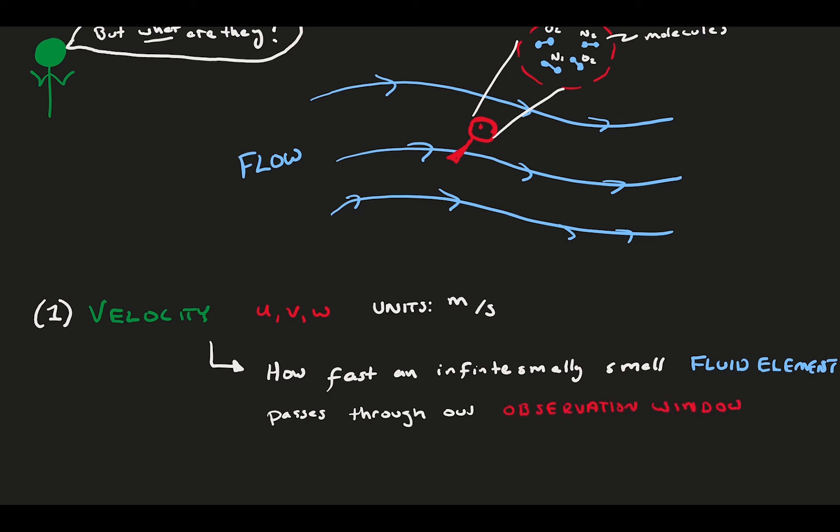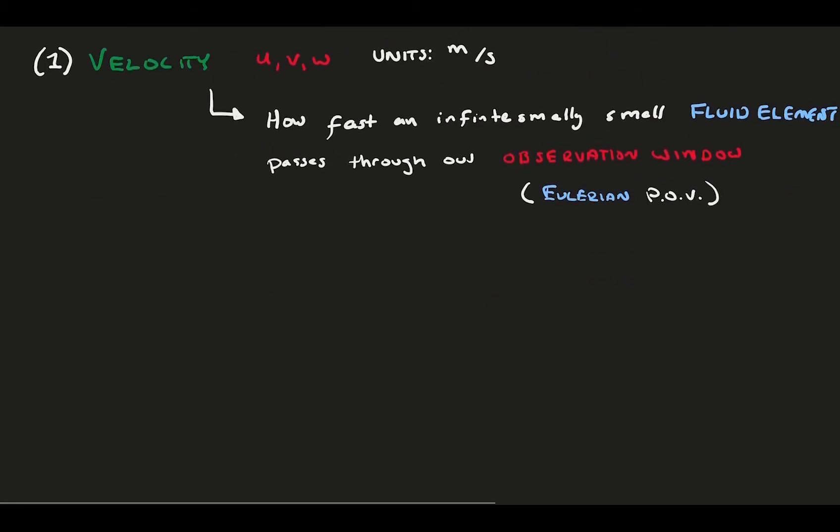Remember, we take the Eulerian point of view, not the Lagrangian, which means we fix an observation window in space, and we watch things that pass through it. Note, this is specifically not a molecular quantity, but more of a statistical average of a group of molecules moving.